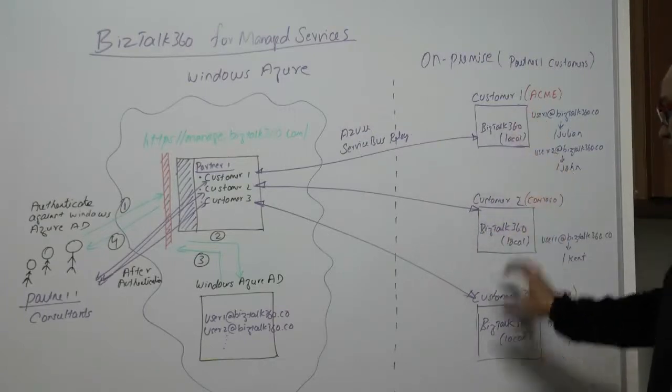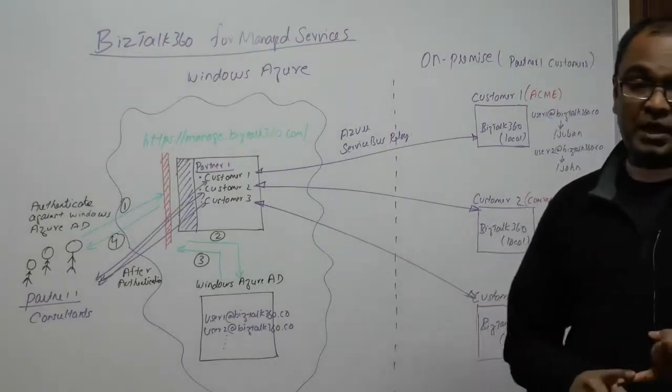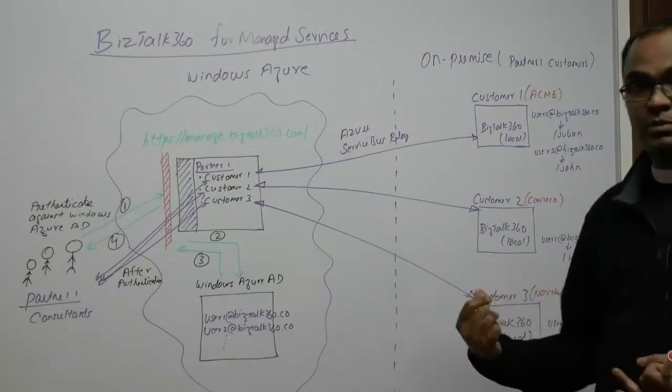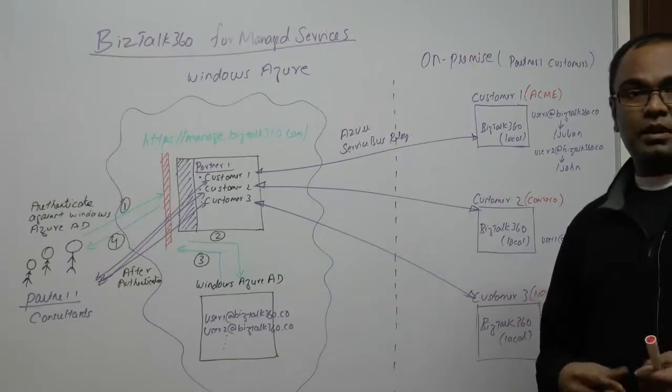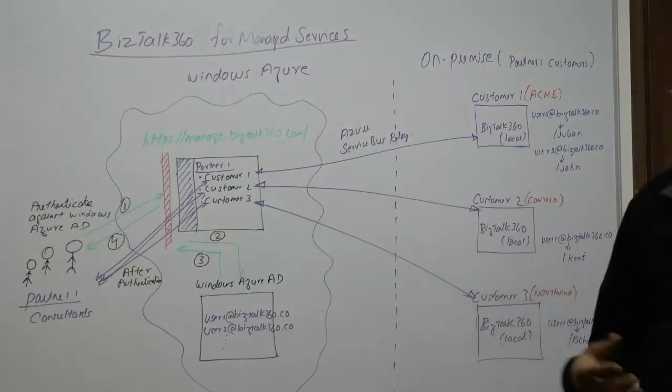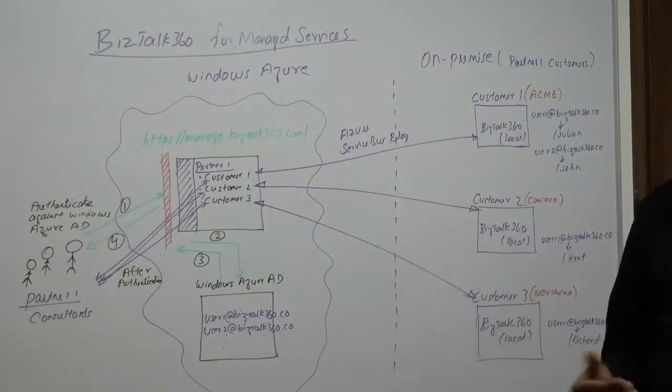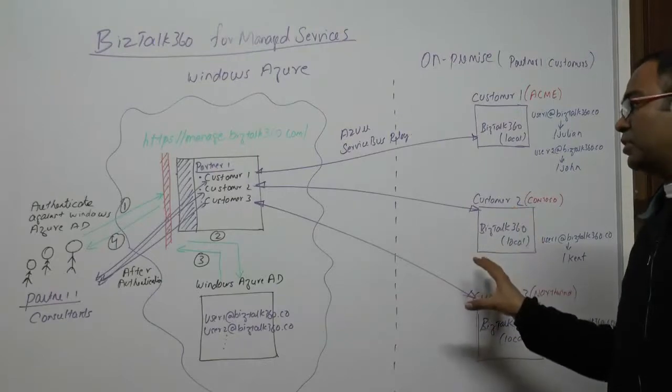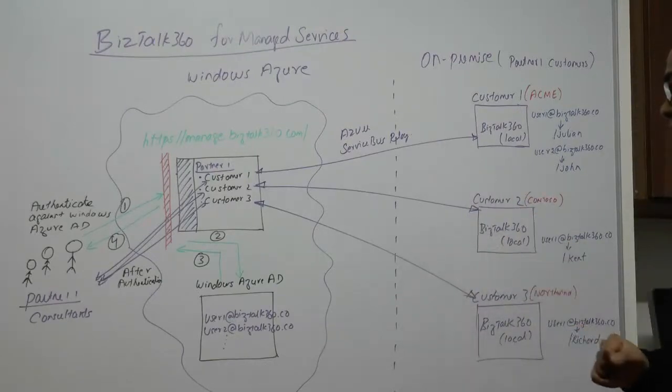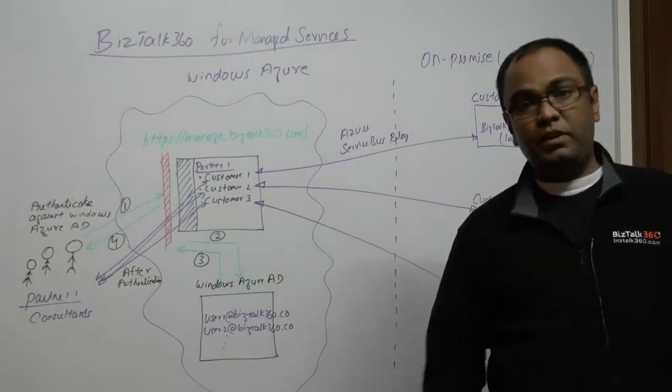Previously, if the consultant from Partner One needs to manage any of the BizTalk environments, they need to physically go into one of these environments. They use various techniques like VPN, Citrix to get to the customer site, or they didn't have the option to go to the customer site remotely at all.